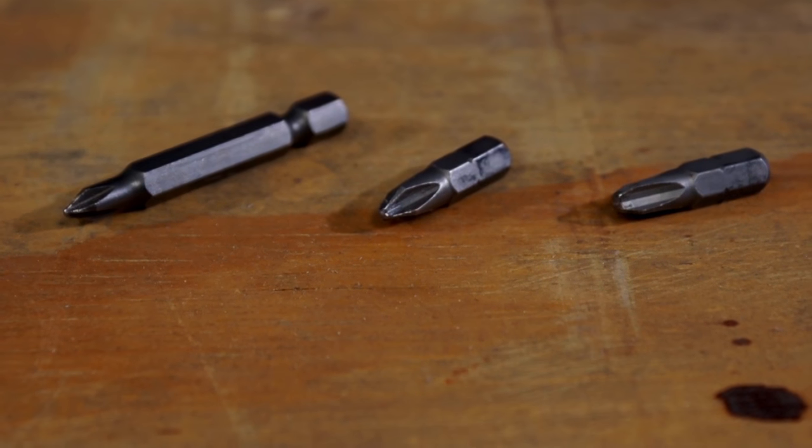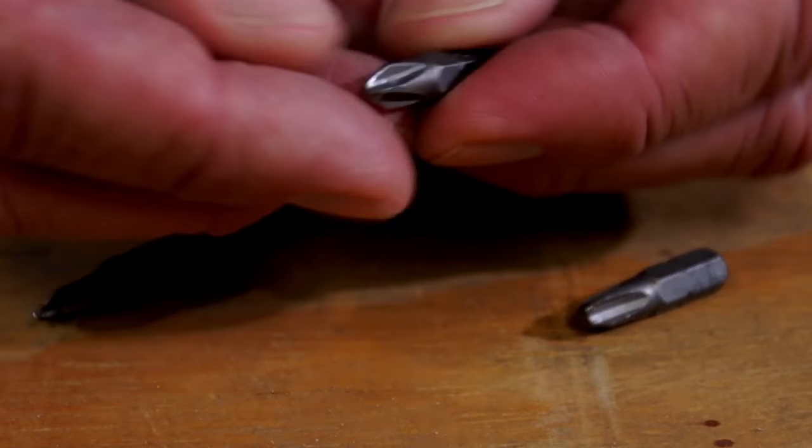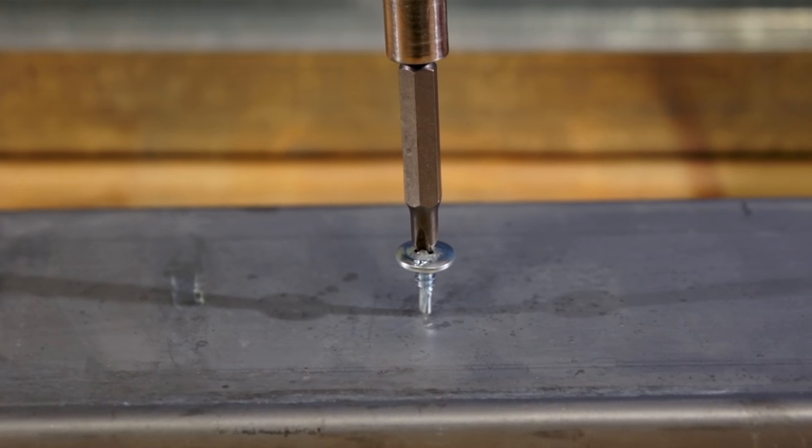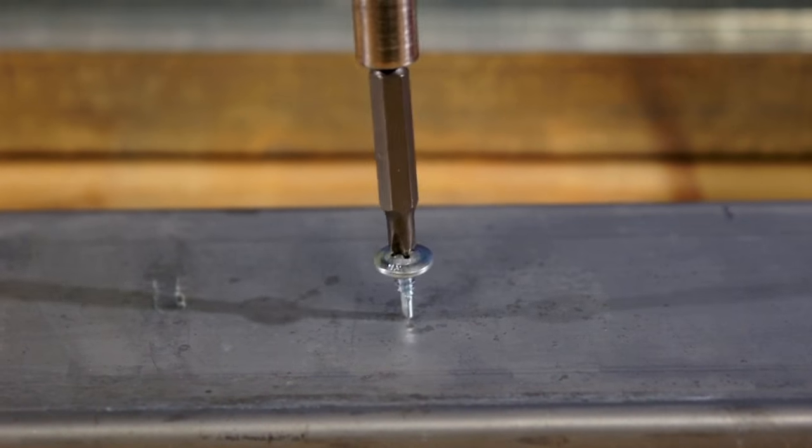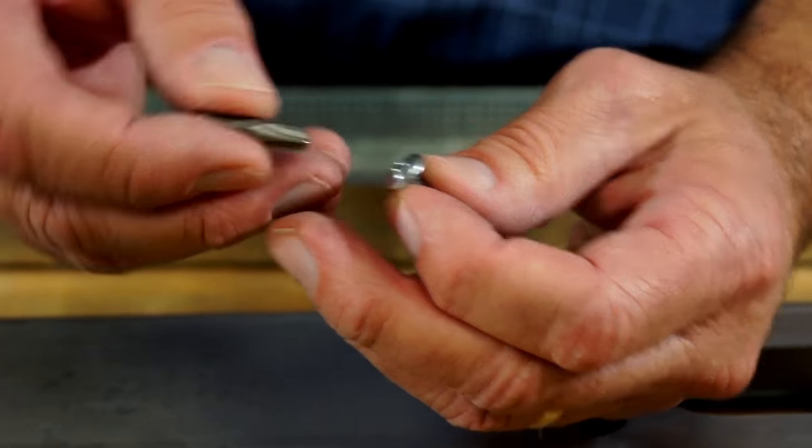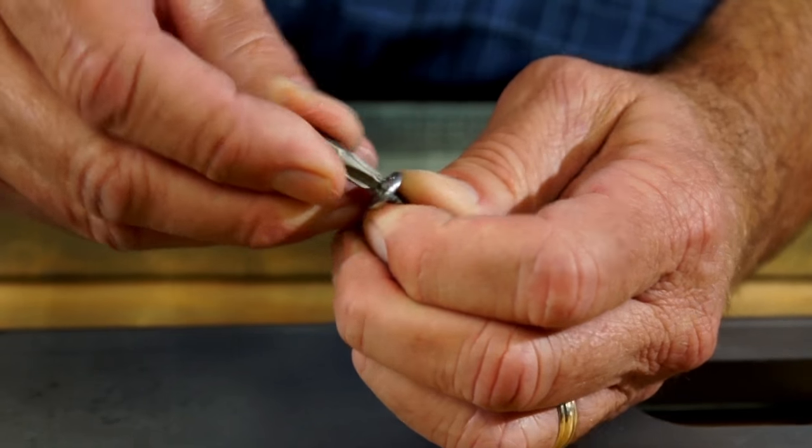First thing, make sure you're using the proper bit, usually number two Phillips. If you use a number one Phillips bit, it's gonna wobble so bad that you won't be able to keep it in the saddle. If you use a number three Phillips bit, it won't even begin to fit the screw.